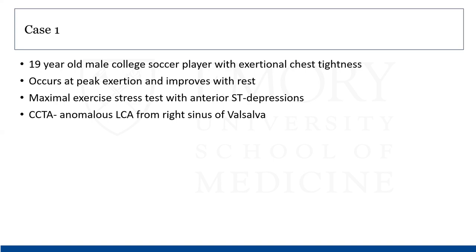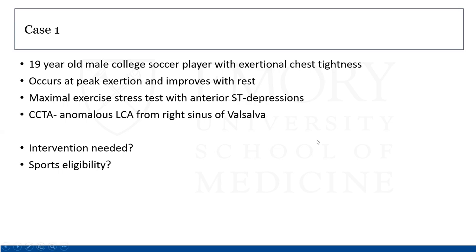Starting with two cases. The first is a 19-year-old male college soccer player with exertional chest tightness that happens every time he reaches peak exertion and goes away immediately when he stops. We performed a maximal exercise stress test and found anterior ST depressions. Given this concern for coronary artery abnormalities, we got a CCTA and found an anomalous left coronary off the right sinus of Valsalva with an interarterial course. His natural questions were: is any surgery needed, and can he return to sports — and if so, what's the safest way?